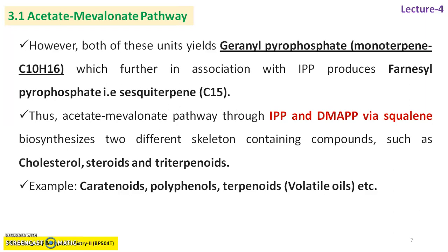Both of these units yield geranyl pyrophosphate — that is a monoterpene — which further in association with IPP produces farnesyl pyrophosphate, also known as a sesquiterpene. These acetate mevalonate pathway intermediates IPP and DMAPP via squalene biosynthesis yield two different skeleton-containing compounds such as cholesterol, steroids, and triterpenoids. Triterpenoids are volatile oil-containing compounds also biosynthesized via this pathway — for example, carotenoids, polyphenols, and terpenoids or volatiles, which are secondary metabolites biosynthesized via the primary metabolism of glucose, and thereafter formation of IPP and DMAPP.